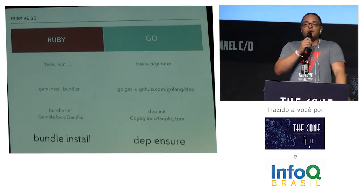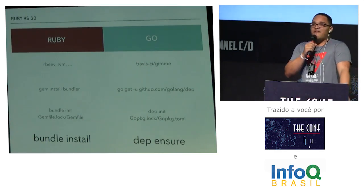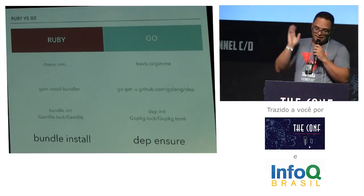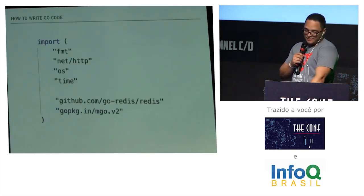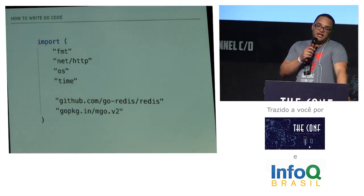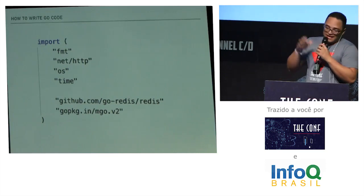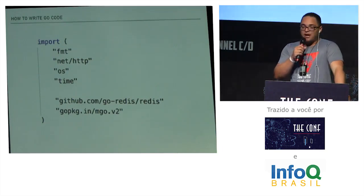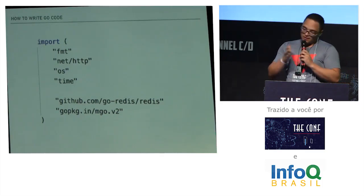The way Go looks for dependencies is pretty simple. It goes into your workspace and looks there, but it will first look in the vendor directory in your project. If your package is there, it doesn't need to go all the way to the workspace. When importing packages from the standard library, you don't need to provide the full name — just a short name — and Go avoids name collisions that way. For a third-party package, you need to provide the full name: the repository, the username, and then the package name.